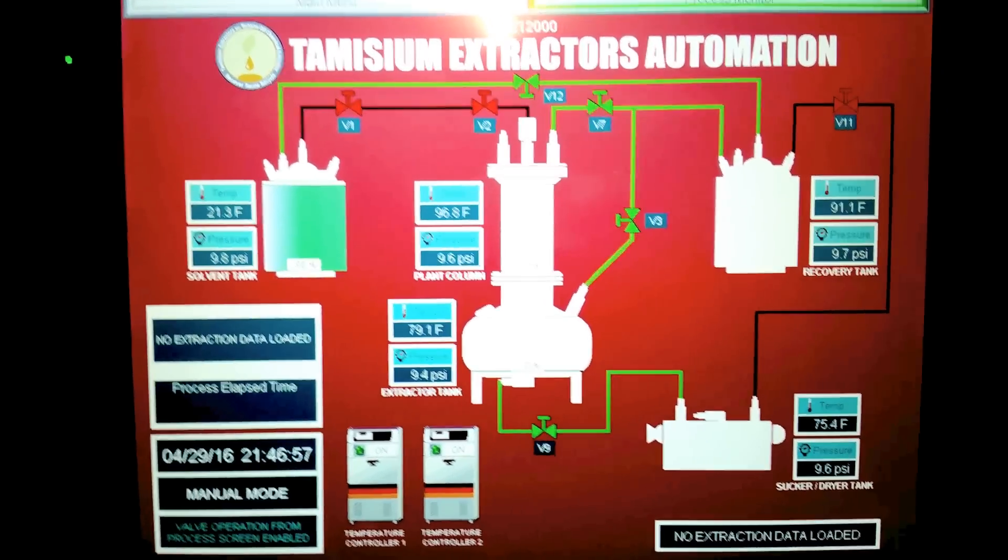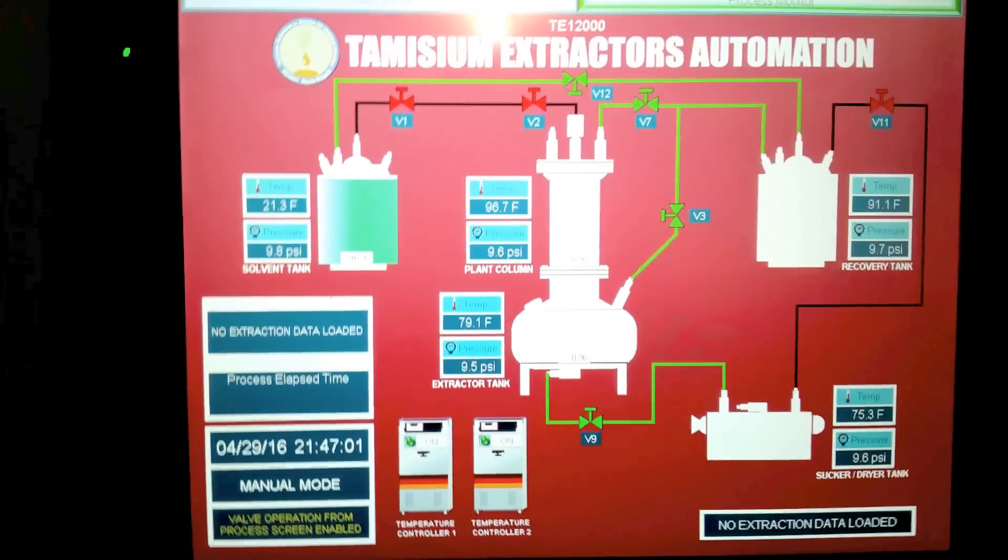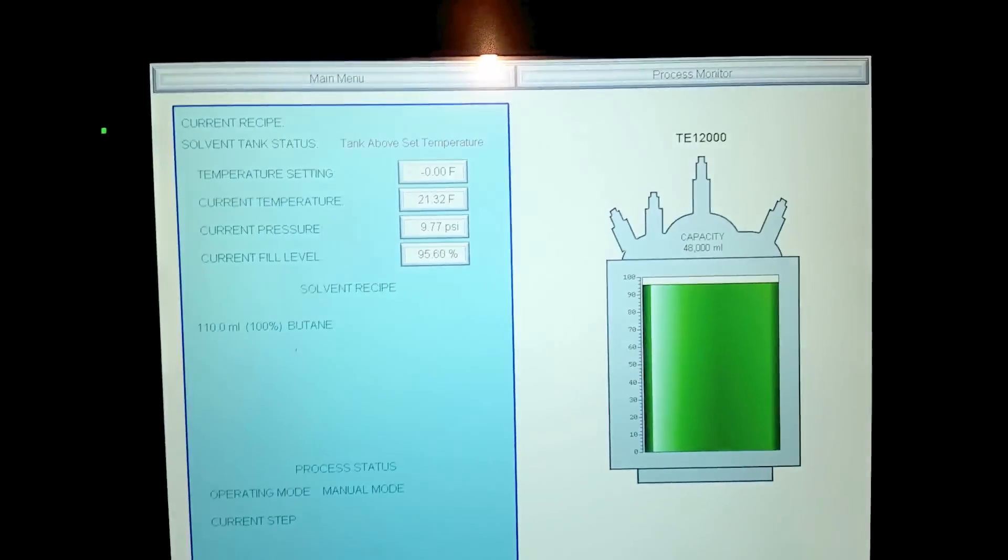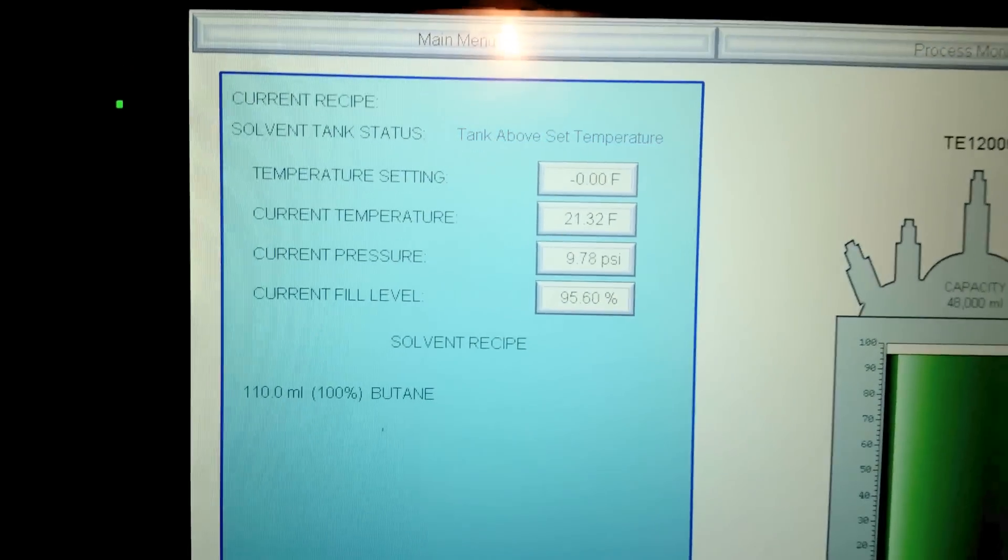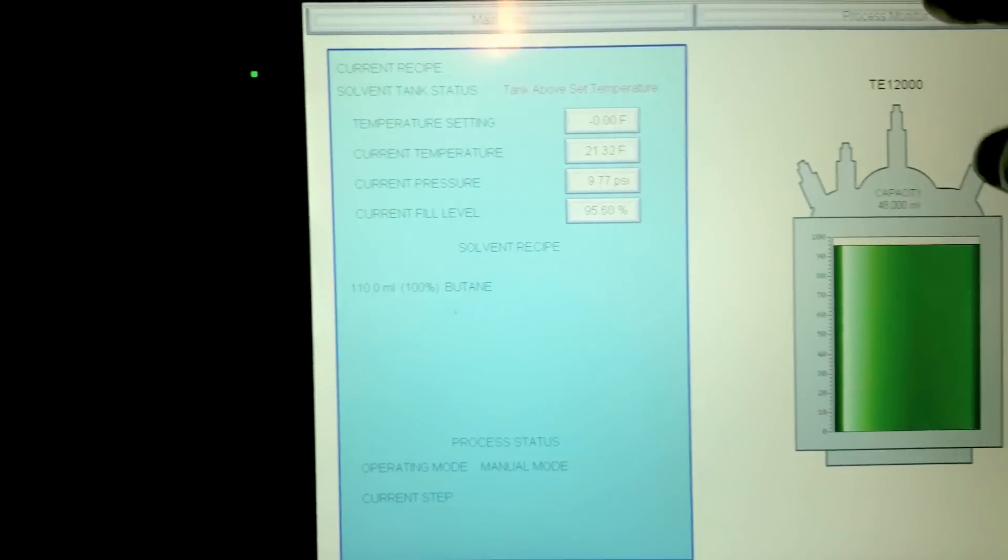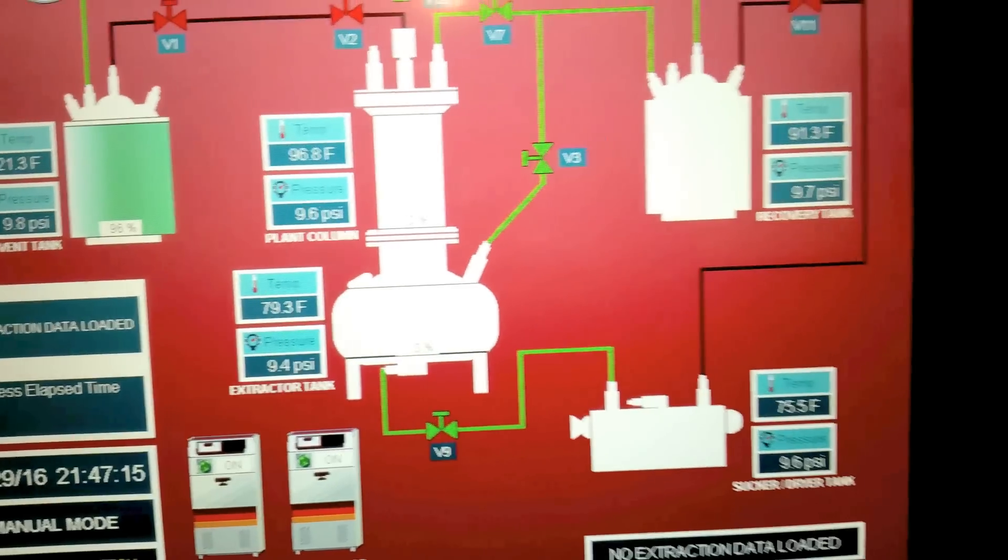Right now the system is recovering the vapor pressure from all of the tanks back into the recovery tank because the day is finished. It's climbing at 95.58 percent pressure on the tanks.